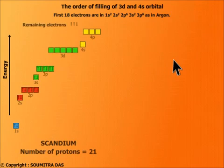Now for the next element scandium the number of protons is 21 and what happens to the energy of 3d orbital? It becomes less than 4s. So the 19th electron will go to 3d orbital and not the 4s orbital.